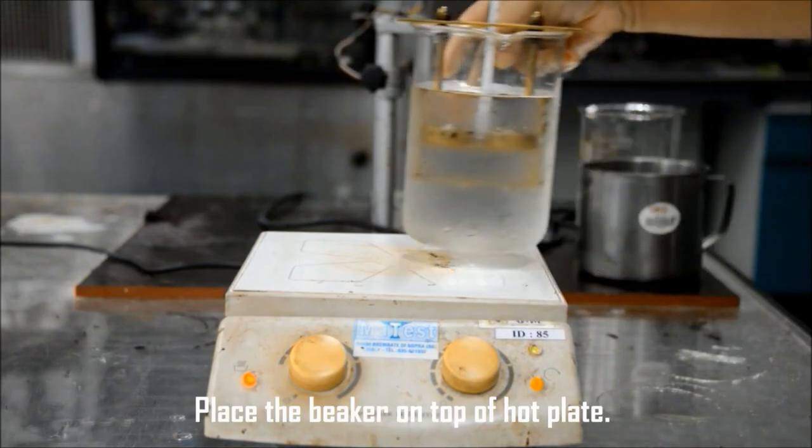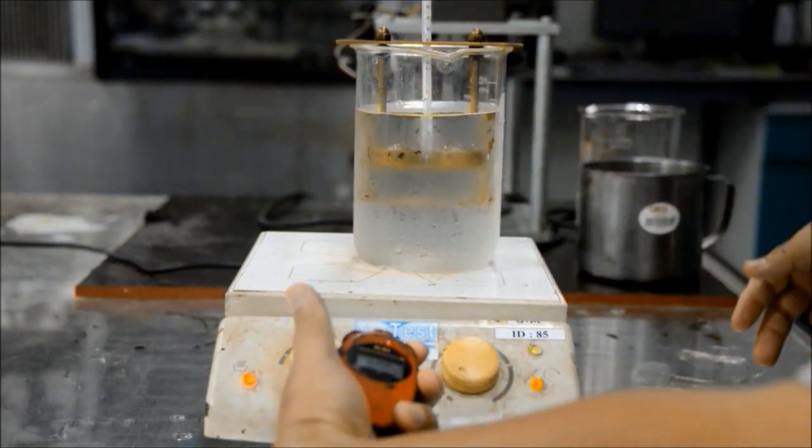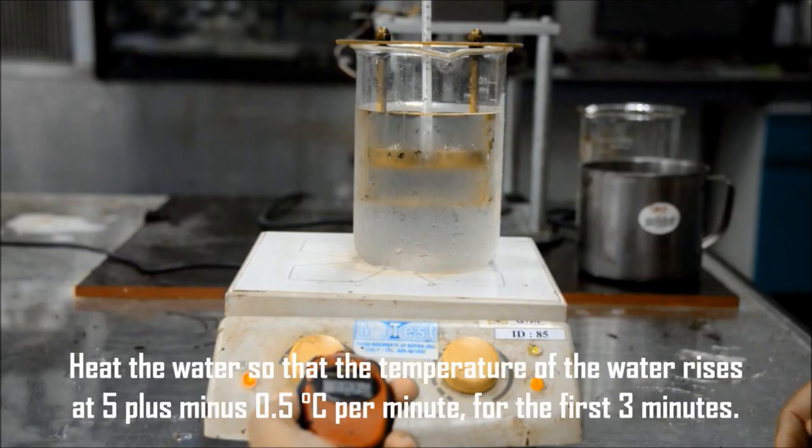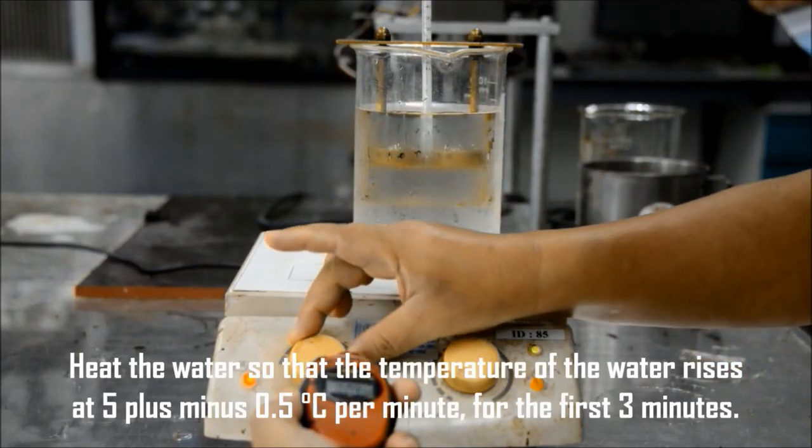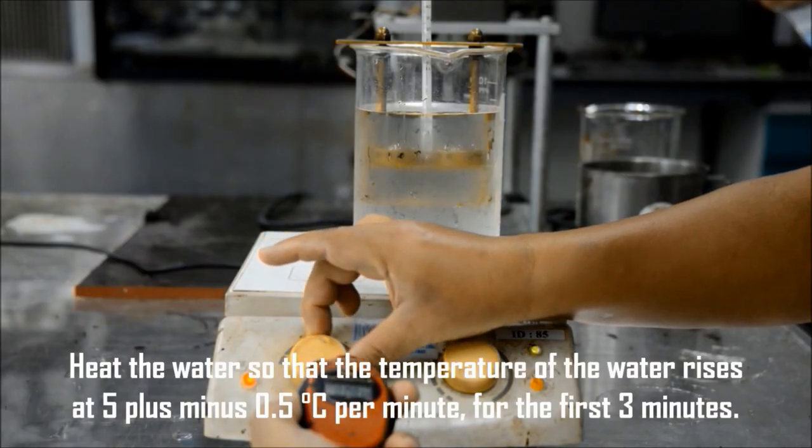Place the beaker on top of hot plate. Heat the water so that the temperature of the water rises at 5 plus minus 0.5 degrees Celsius per minute for the first 3 minutes.